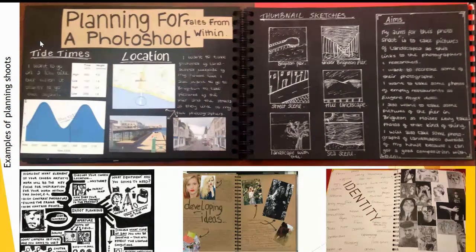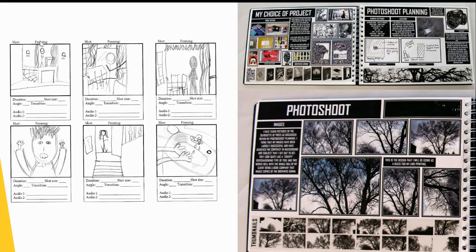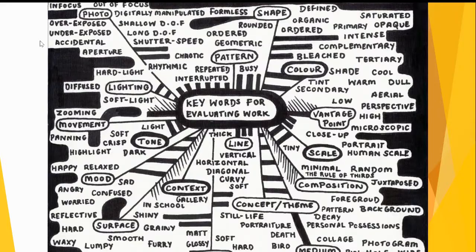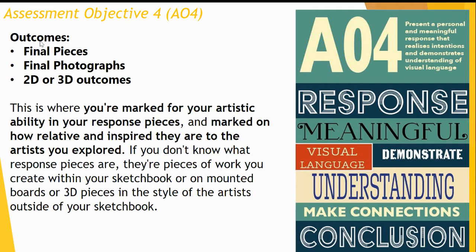AO3 is all about recording your ideas, and for photography students the majority of this will be done through taking photographs. It can also be done by annotating your work, explaining your ideas, and discussing how your ideas developed from start to finish. There are also elements of drawing — for instance, a storyboard to suggest how you plan your photographs — as well as using key language to explain your ideas.